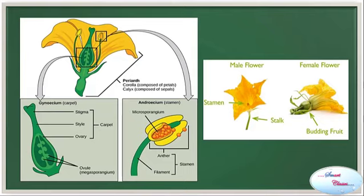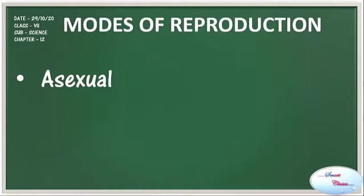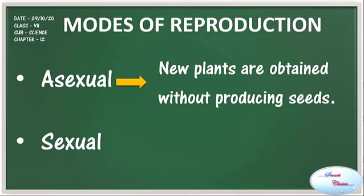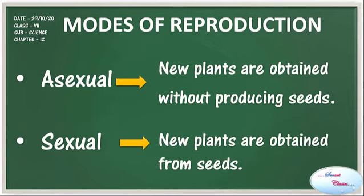Moving ahead — modes of reproduction. There are several ways of reproduction in plants. They are categorized in two terms. The first one is asexual reproduction and the second one is sexual reproduction. Asexual reproduction means that new plants are obtained without producing seeds. In sexual reproduction, new plants are obtained from seeds.